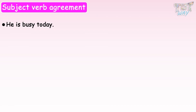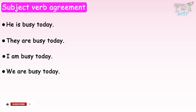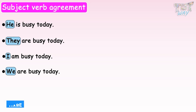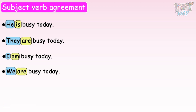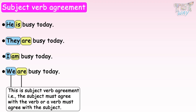He is busy today. They are busy today. I am busy today. We are busy today. Here you can see, when the subjects are he, they, I, and we, we have used different helping words with different subjects. 'Is' is used with he. 'Are' is used with they. 'Am' is used with I. 'Are' is used with we. This is subject-verb agreement.